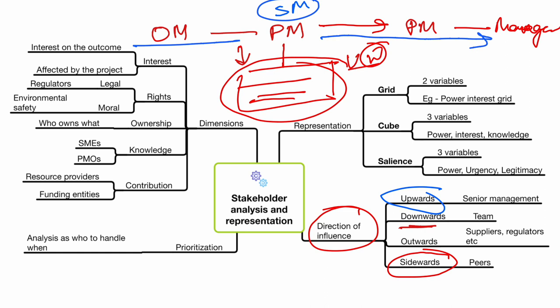Upward influence refers to senior management — your CIO, senior managers, directors. If someone can manage those above them, that is upward influence. Outward influence is when someone's influence goes outside the organization — for example, a contractor who managed BSNL to get payment. That influence toward an external supplier or customer is outward influence.